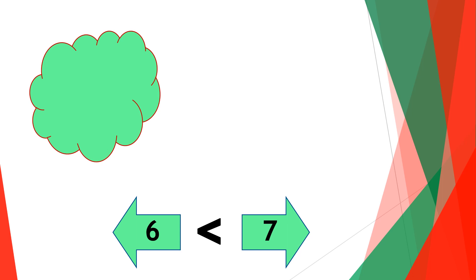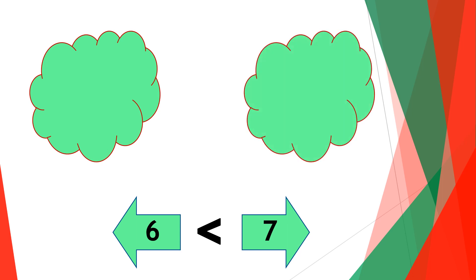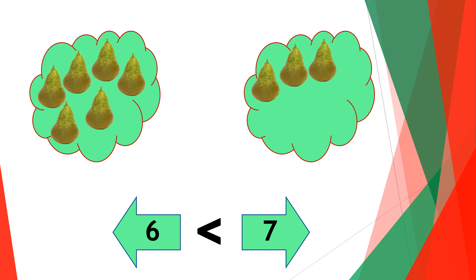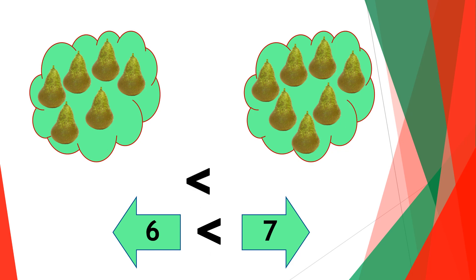Put six pears on one side and seven pears on the other side — one, two, three, four, five, six and one, two, three, four, five, six, seven — so that means six pears is less than seven pears, and this clearly shows that six is less than seven.